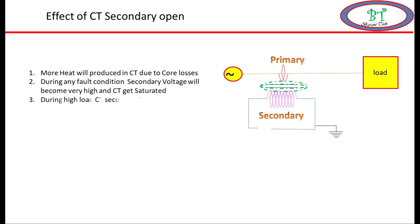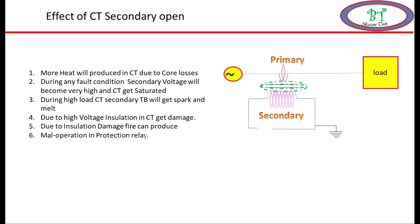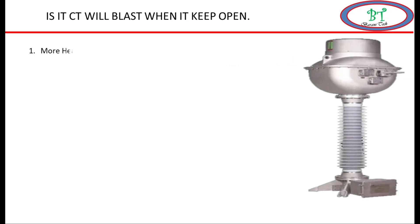During high load, the CT current TB will get spark and melt. Due to high voltage, the insulation in CT gets damaged. Due to insulation damage, fire can be produced. And also due to this CT open in the secondary, it may mal-operate the protection relay.